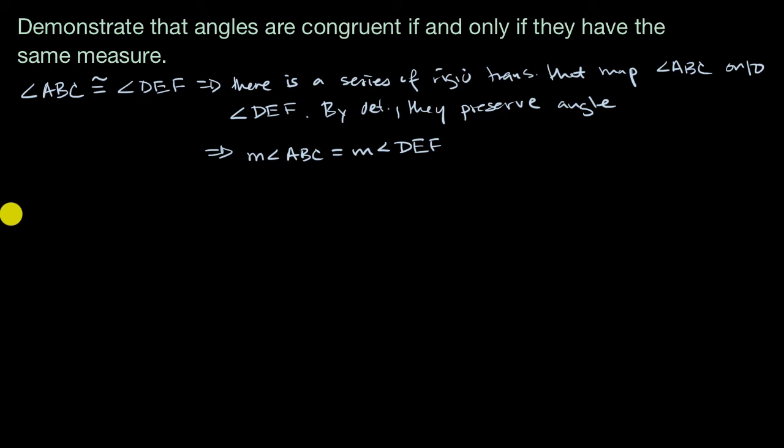So now let's start with the idea that measure of angle ABC is equal to the measure of angle DEF. And to demonstrate that these are going to be congruent, we just have to show that there's always a series of rigid transformations that will map angle ABC onto angle DEF. And to help us there, let's just visualize these angles.